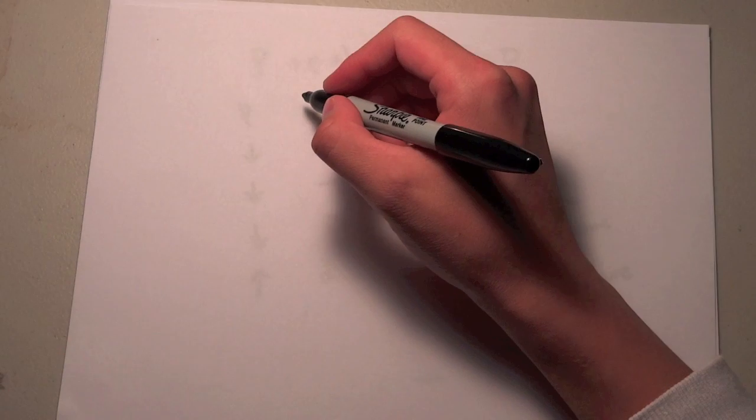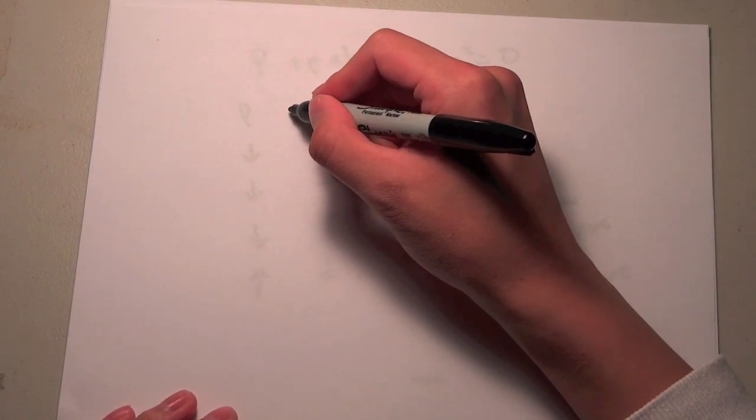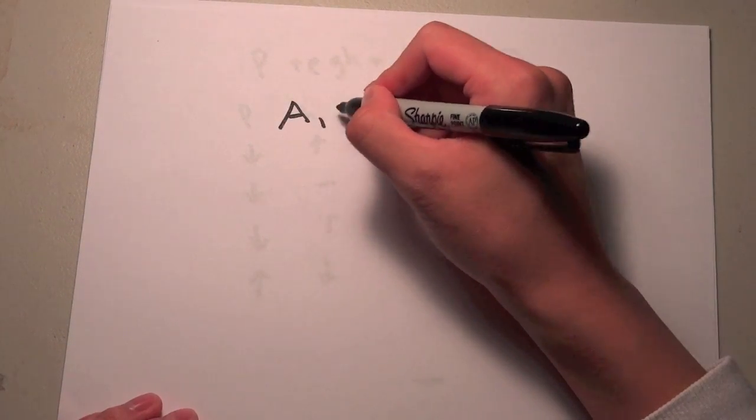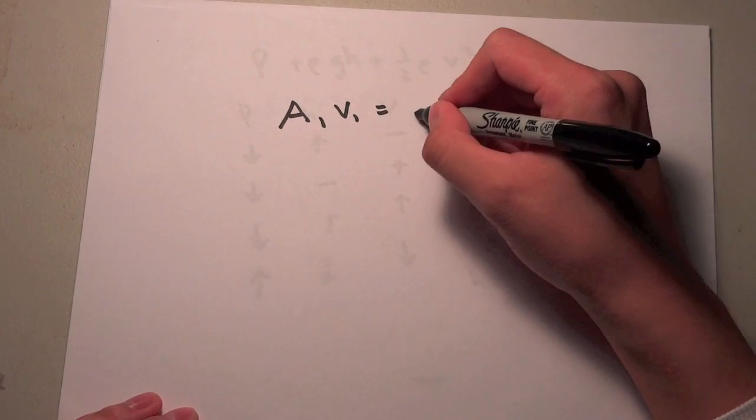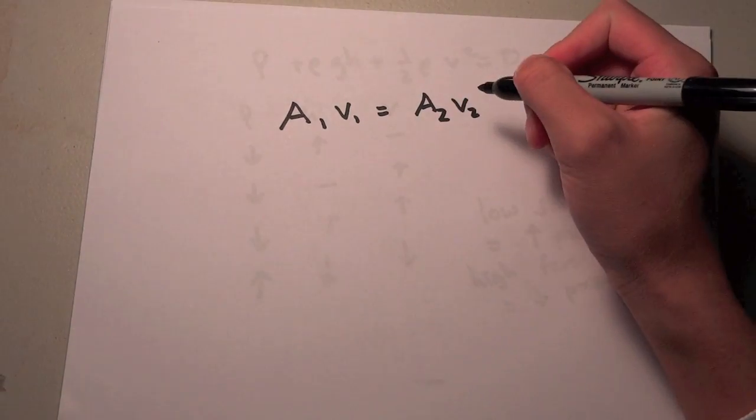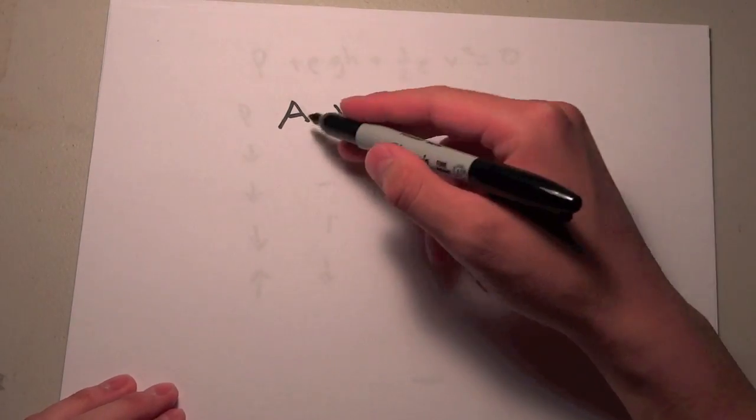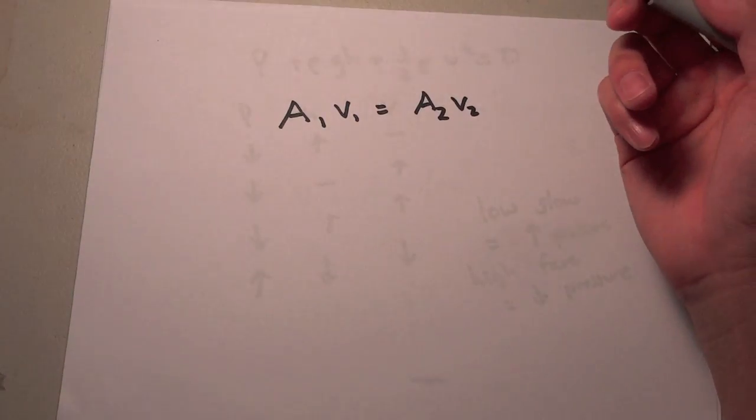So we're going to say that because it's an ideal fluid, we know that the flow rate is going to be the same. Which says A₁V₁ equals A₂V₂. So this says that when the cross-sectional areas are related, these are cross-sectional areas, and velocity are related, directly related.